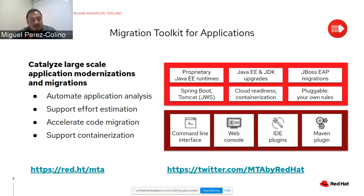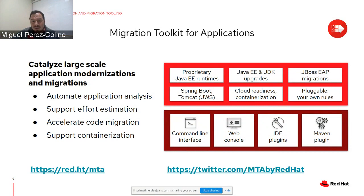We provide it in four flavors. One is the command line interface for people who want to do specific things when analyzing an application — automating it, using it on your laptop or server, or embedding it into CI/CD pipelines. We also have the web console, which is the easiest to use. It has a nice interface where you can upload your binaries or point it to your source code, and it will analyze it and provide reports in HTML. There are also IDE plugins for Visual Studio Code and Eclipse.